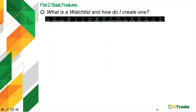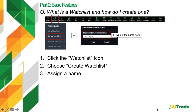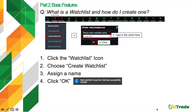What is a watchlist and how do you create one? A watchlist is a basic feature of our online platform wherein you can create a list of stocks to monitor your holdings or those you want to purchase in the future. Simply click the watchlist icon, choose the dropdown option Create Watchlist, assign a name, and click OK to confirm. You will then be prompted that you successfully created one.